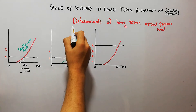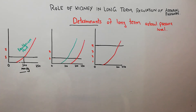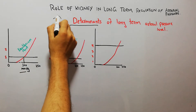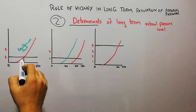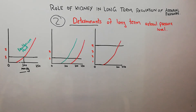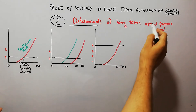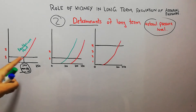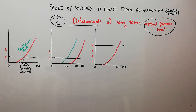So what are the determinants of long-term arterial pressure level? From the same graph we can see that the two most important determinants are: a shift in the renal function curve, and a shift in the curve for the intake of salt and water. Changes in arterial pressure level can only occur if there is a change in renal function or a change in the intake of salt and water.